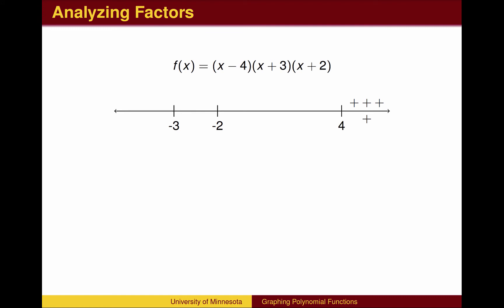Between -2 and 4, one of the factors changes sign from positive to negative. We can verify this by plugging in any number between -2 and 4, for example 0. The first factor is negative, the others are positive, so the product will have one negative factor, and therefore is negative. The graph will be below the x-axis in this region.